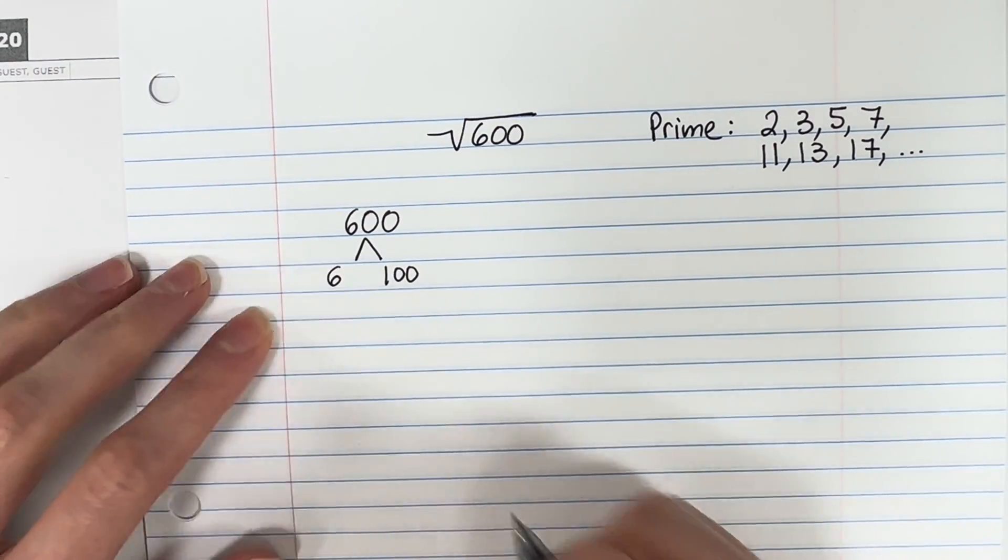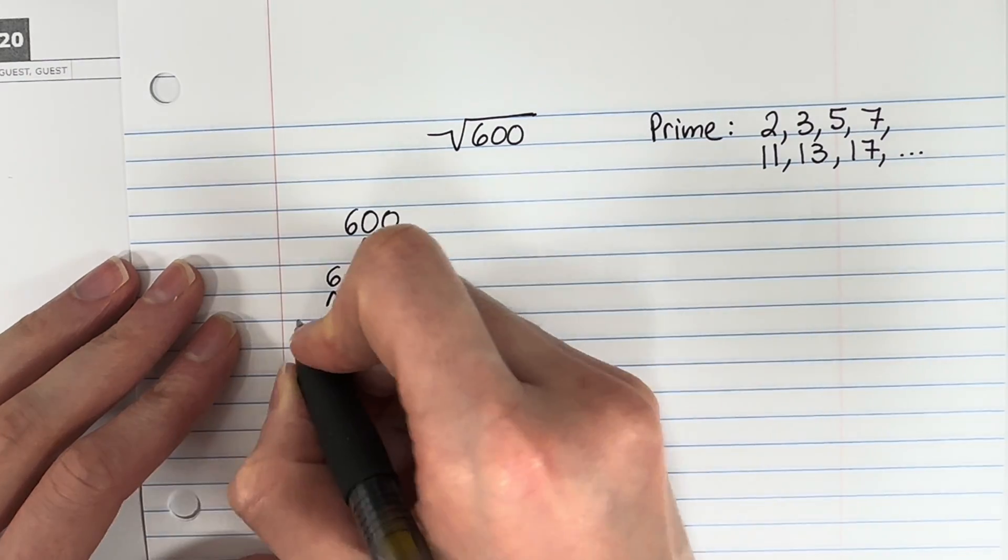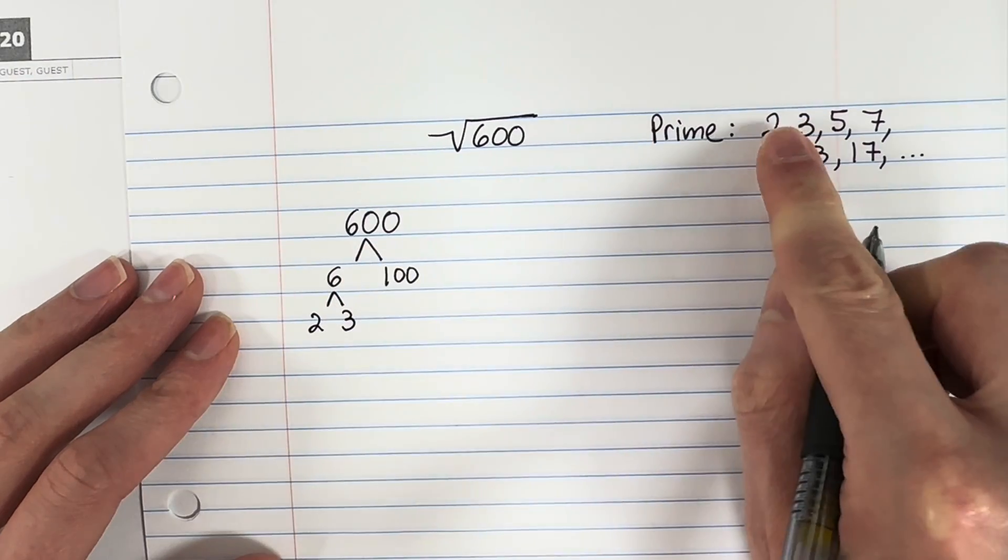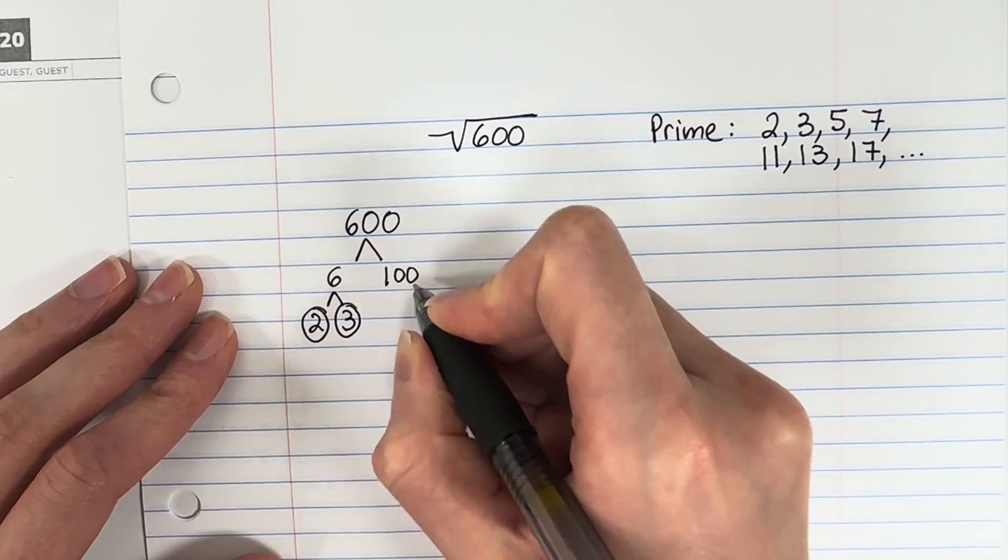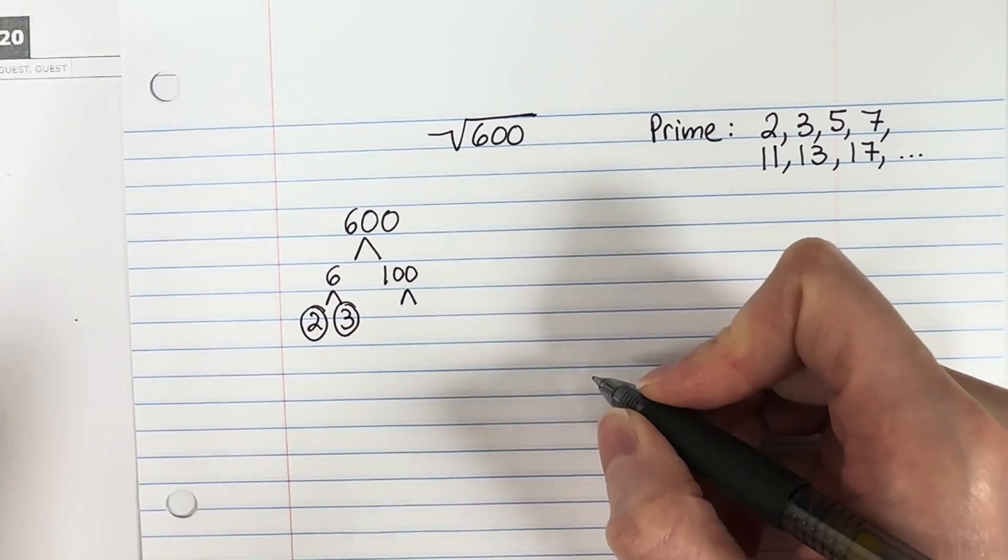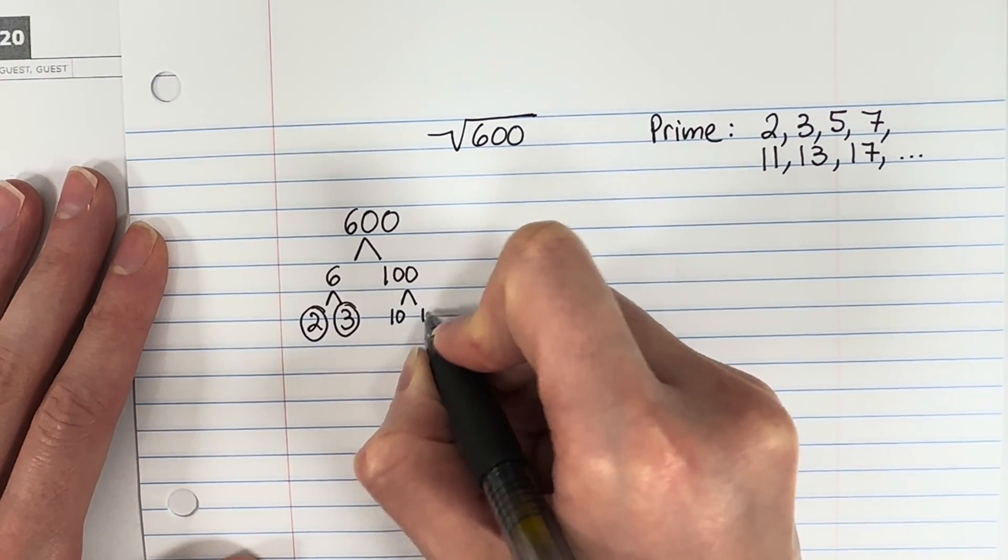So 6 is not prime, obviously. So give me 2 numbers that I can multiply to get 6. I can do 2 times 3. And 2 and 3 are both prime. So I'm going to go ahead and circle those. 100. Give me 2 numbers. Any 2 numbers I can multiply to get 100. I'm going to go ahead and do 10 times 10.